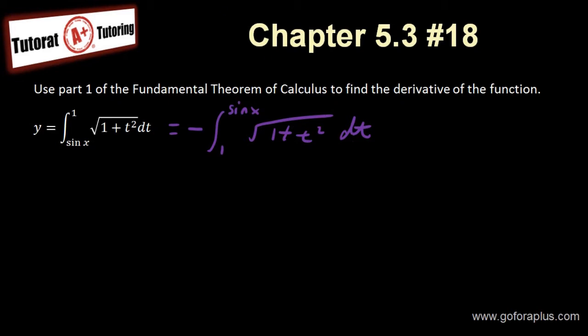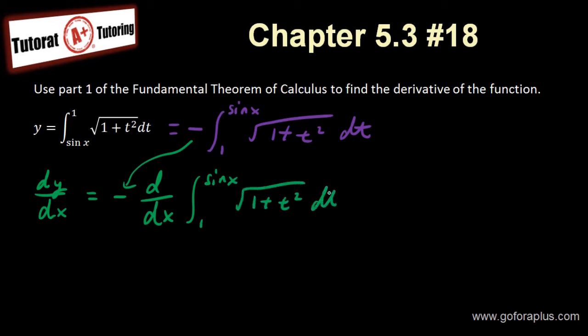The function stays the same, square root of 1 plus t squared dt. Now that I have something like this, I want to find the derivative of this function. So dy over dx equals minus d over dx. I have the minus sign because of here, integral from 1 to sine of x, square root of 1 plus t squared dt. Since the rule is saying that this must be just x, but I have sine of x, I want to use substitution, u equals sine of x.